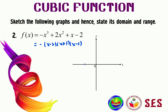With the same x-intercepts — x = -1, x = 1, and x = 2 — but now the y-intercept becomes negative 2. Since this has a negative x³ coefficient, the shape of the graph goes from smile to sad. We need to make sure the graph passes through all of the intercepts obtained.